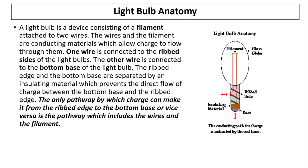One wire is connected to the ribbed side, right over here, and the other connects to the base or the bottom. The ribbed edge and the bottom base are separated by insulating material which prevents the direct flow of charge between the bottom base and the ribbed edge.